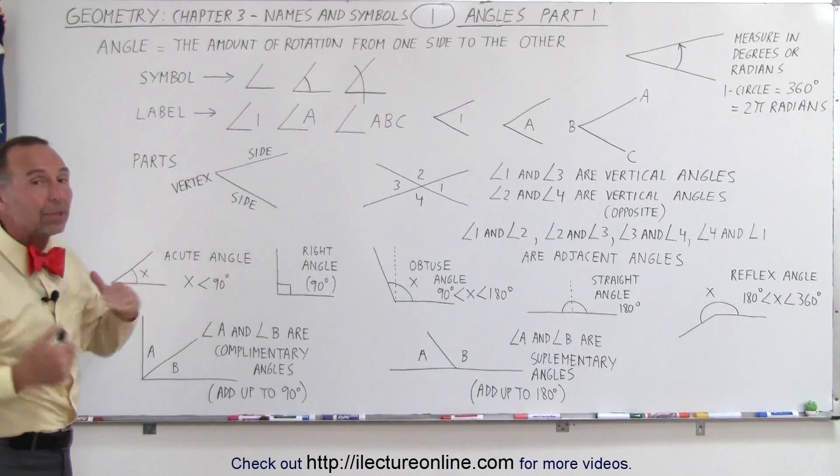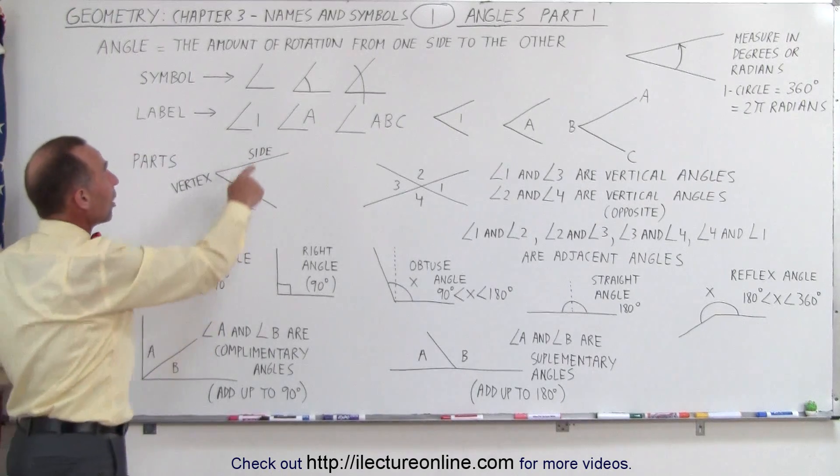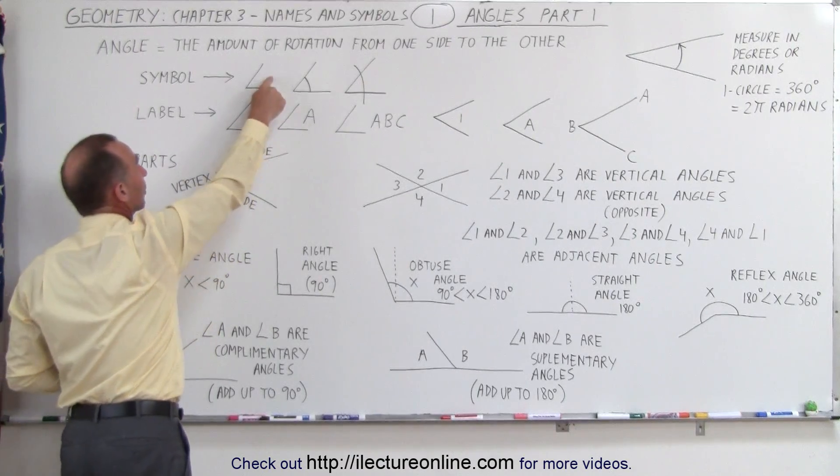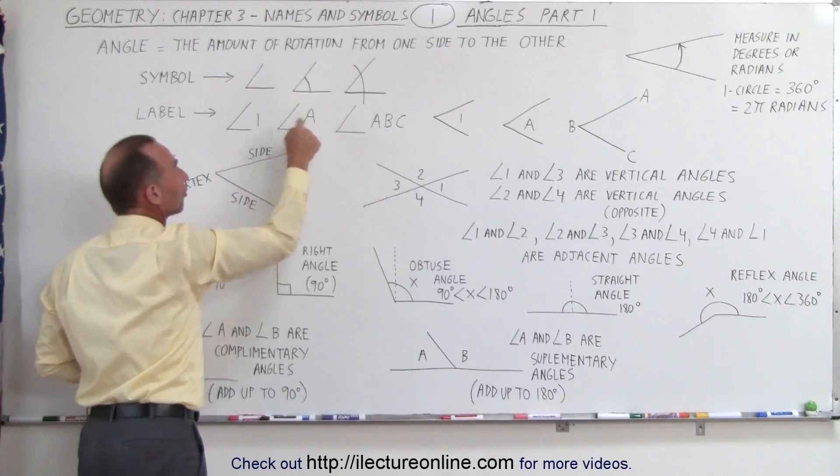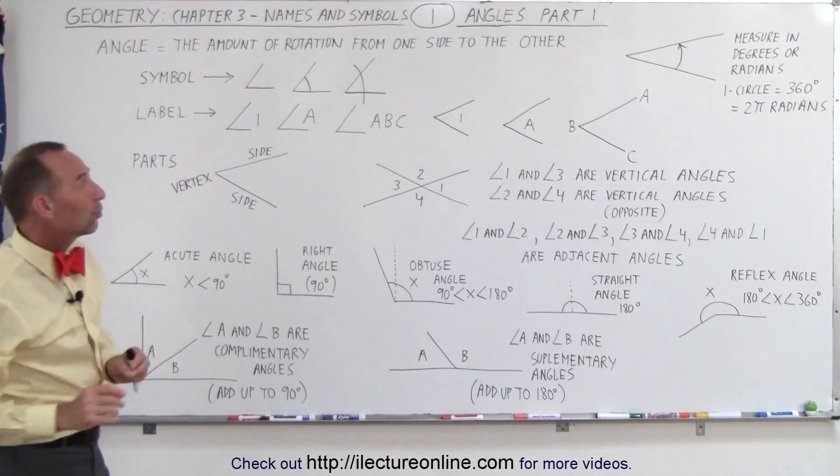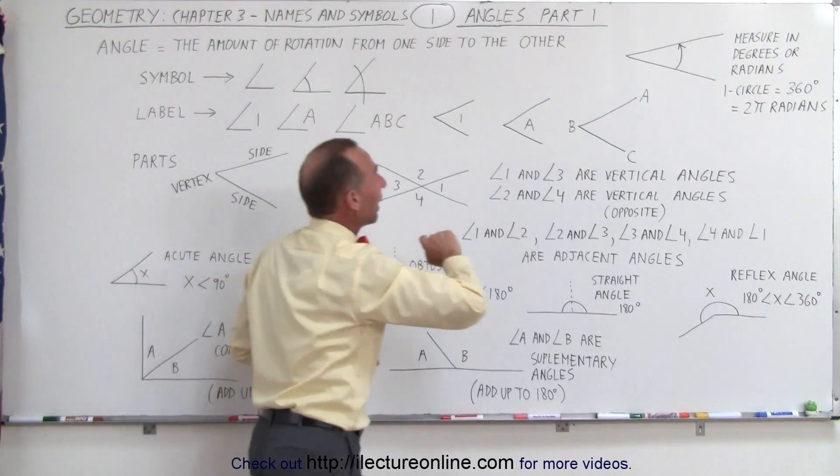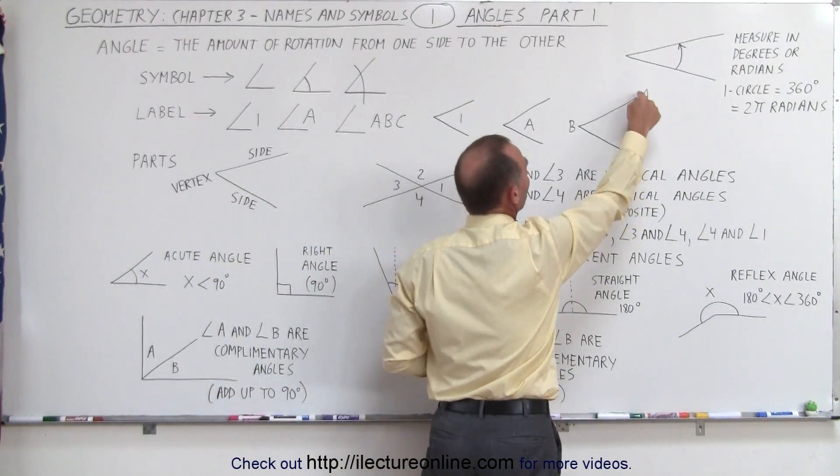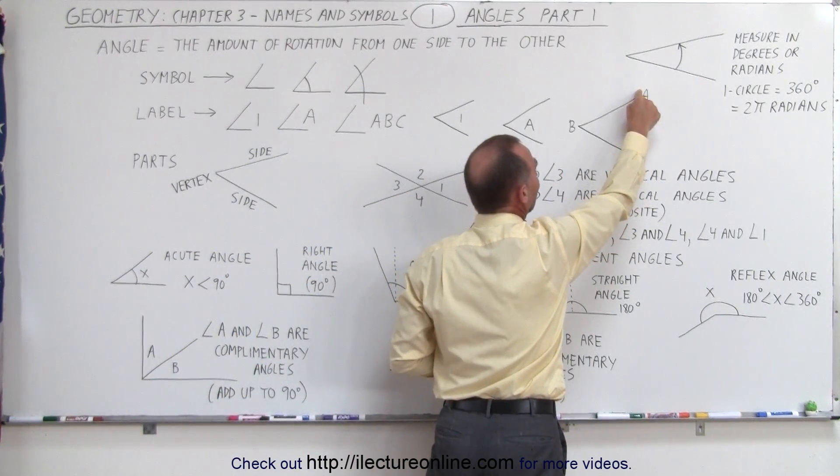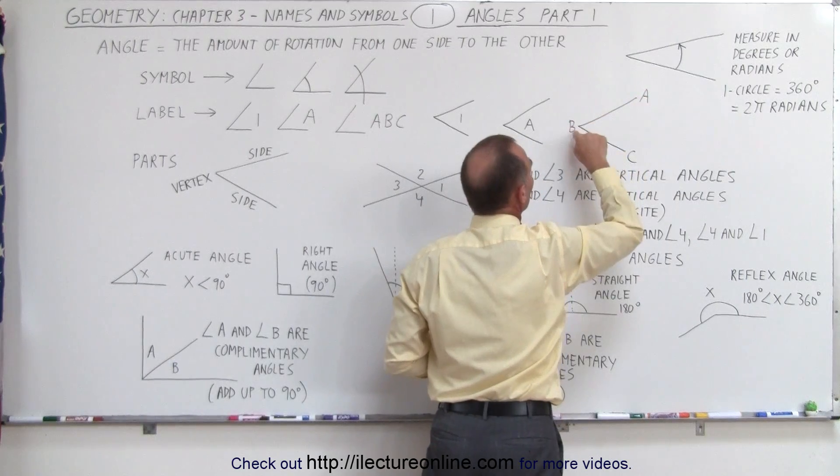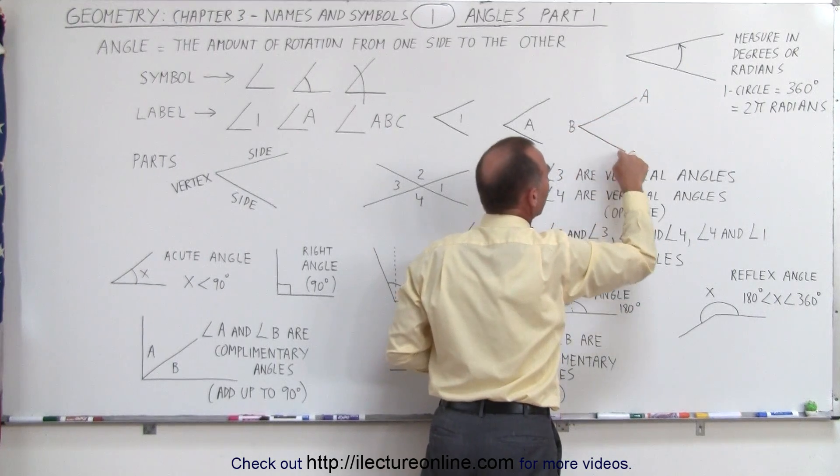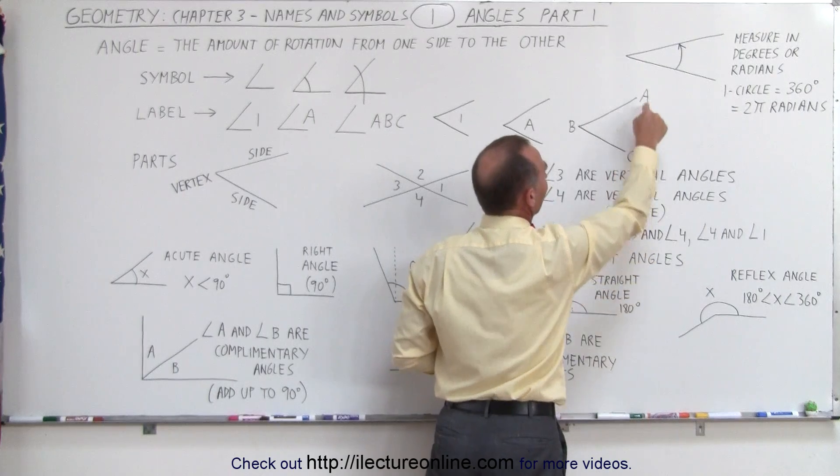Notice we also want to be able to label angles. Sometimes we use numbers. So we put the number along with the symbol. Sometimes we use the letters of the alphabet. And sometimes we indicate the angle by showing over here. We start from the tip or the far end of the first side to the vertex, which we call the next letter, then to the far end of the second side.